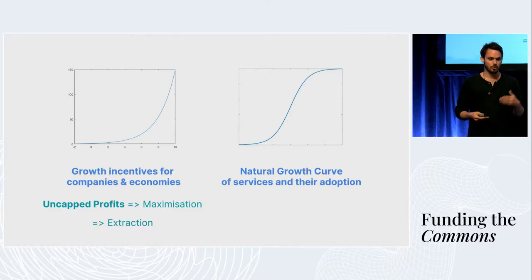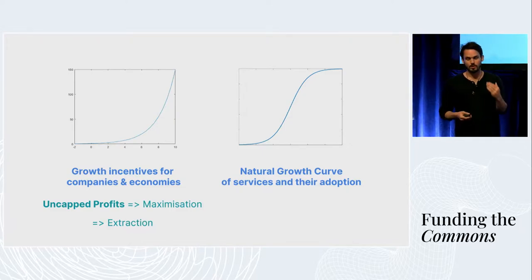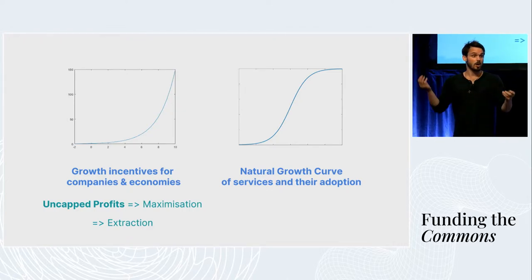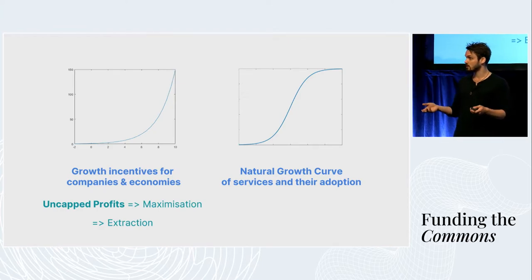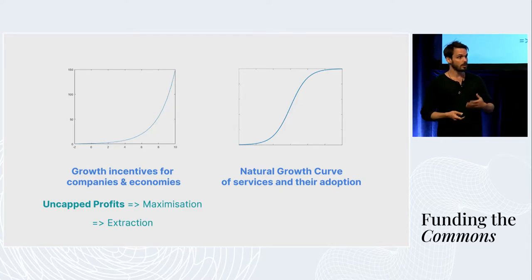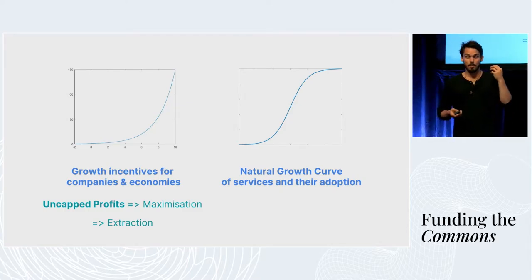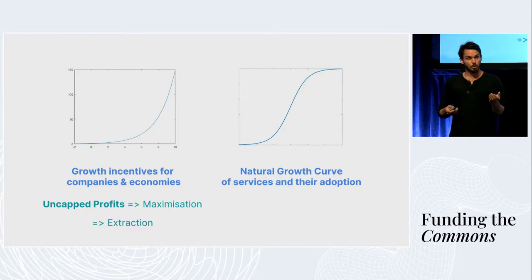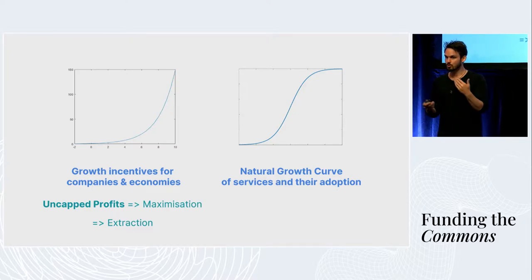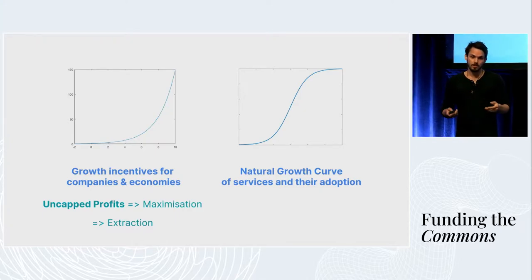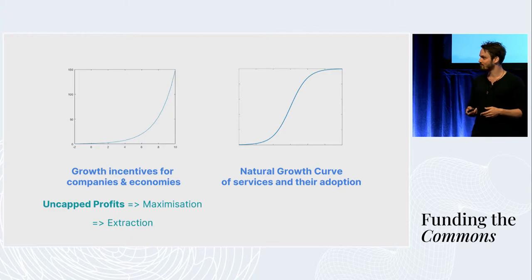There's a natural tension where at the root of the growth incentives in our companies is that individual investors will have uncapped returns — their share price can have any arbitrary value theoretically. So those organizations and shareholders will tendentiously maximize the value of that share, which means at some point it will hit against the natural growth curve of that service and start extracting more and more. Ultimately, we have all the crashes we have in our economy.